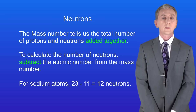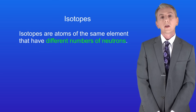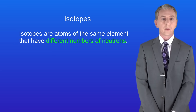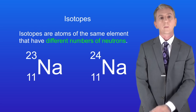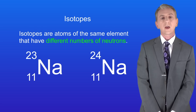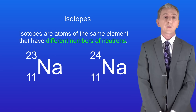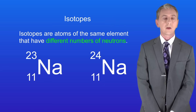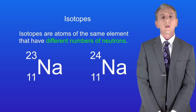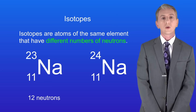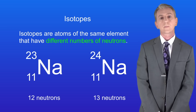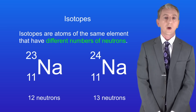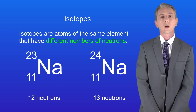There is one important point about neutrons that we need to look at. Sometimes atoms of the same element have got different numbers of neutrons. We call these isotopes, and I'm showing you two isotopes of sodium here. They both have an atomic number of 11 because all sodium atoms have got 11 protons. However, the isotope on the left has got 12 neutrons whereas the isotope on the right has got 13 neutrons. A lot of isotopes are radioactive and we're going to look at radioactivity in later videos.